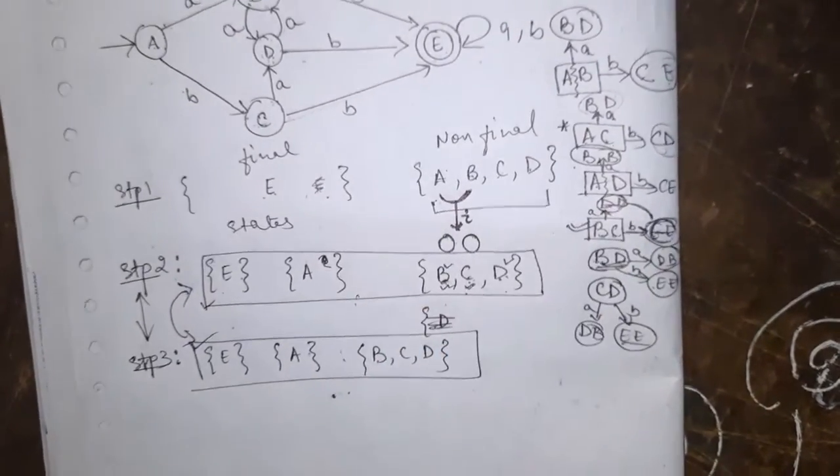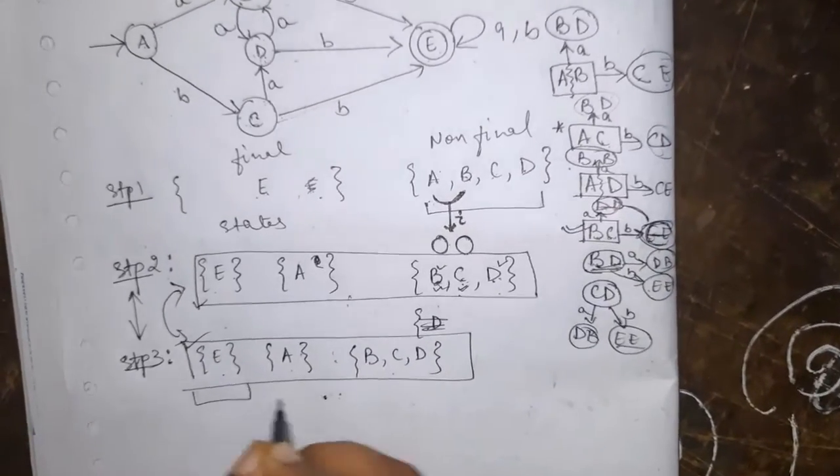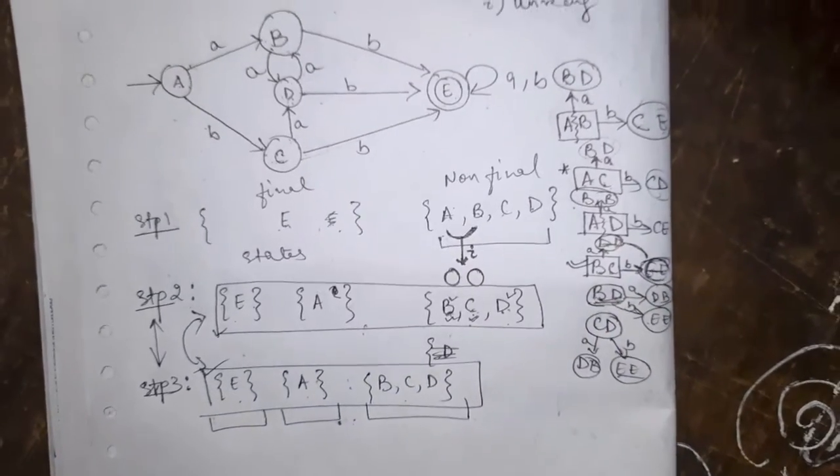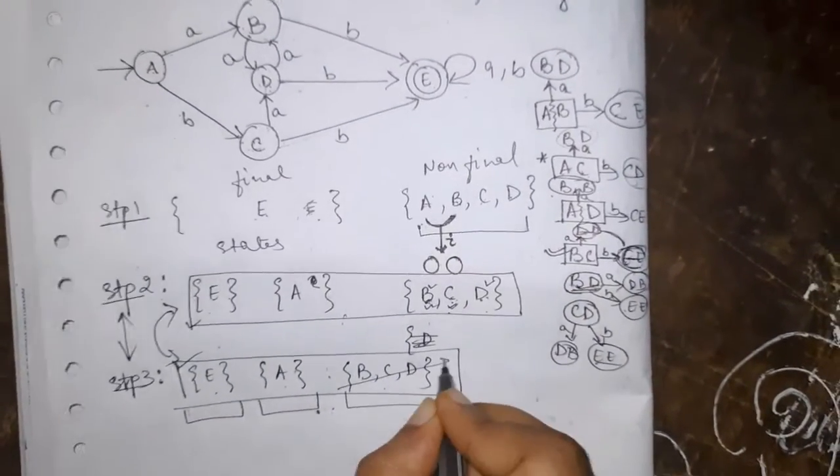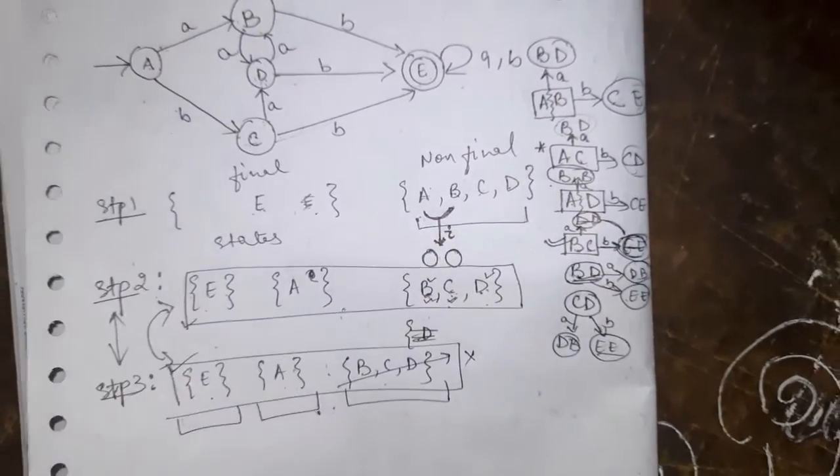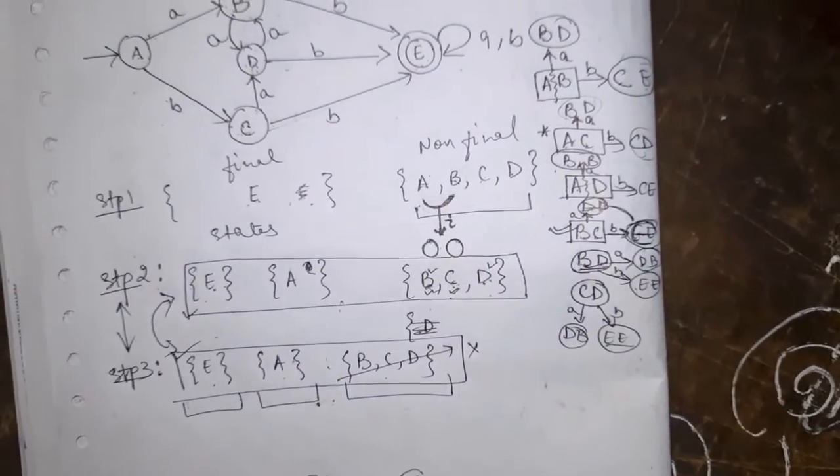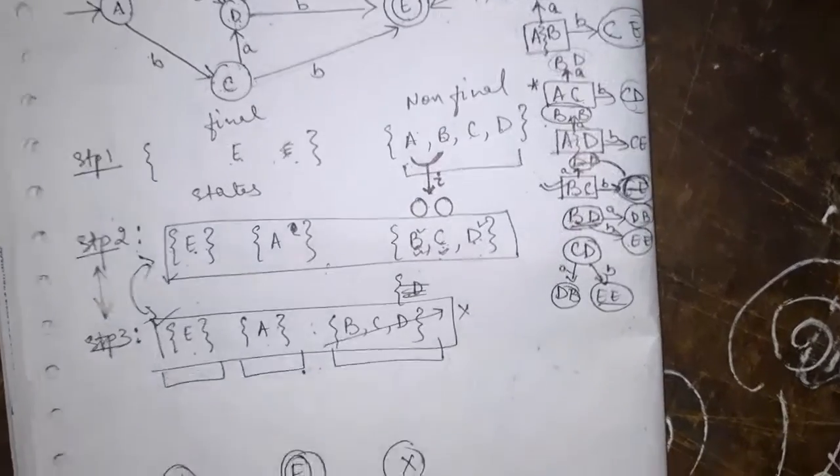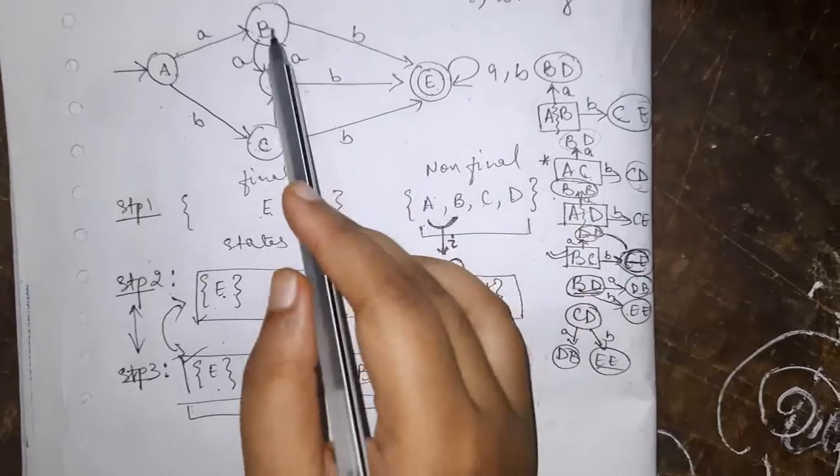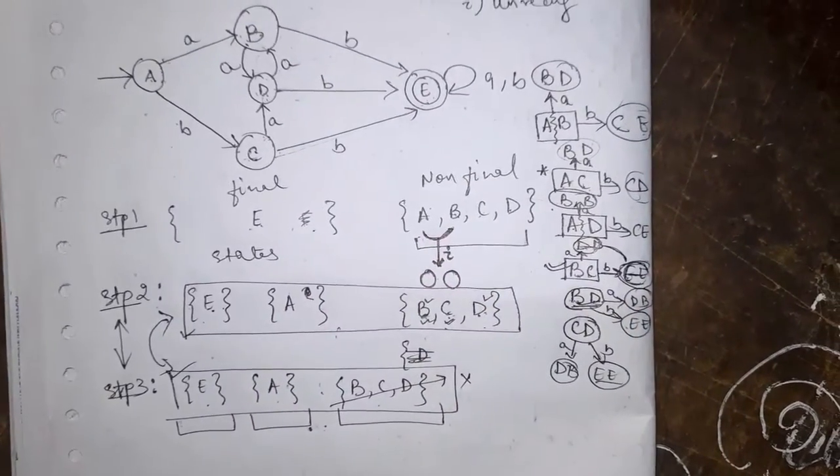So from this we can conclude that now we have three states. This is first, second and third. So let us draw. Let this is named as X. Then we have A, E and X. E was final. Let it be. Initial was A as it is. And then B C D. Whatever transitions are to B C D we will direct it towards X.